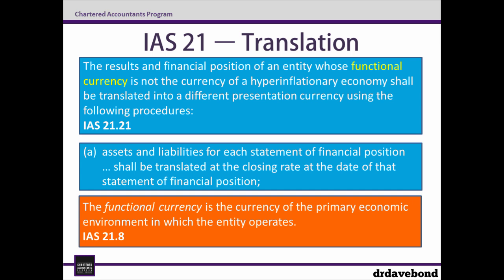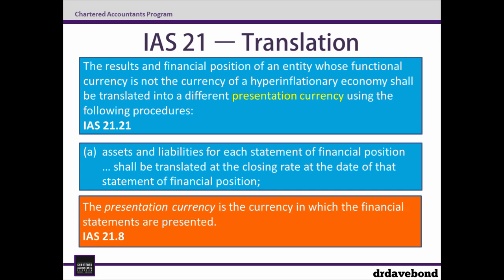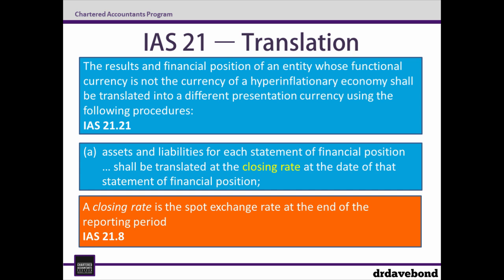The functional currency of Dinkum is the Aussie, but it's not always straightforward to determine this — however, we're not looking at how we deal with that here. The presentation currency is the currency, not unsurprisingly, in which the financial statements are presented; Union Jack uses the pound in this example. And finally, the closing rate is the spot exchange rate at the end of the reporting period. It makes sense to use the closing rate for assets and liabilities because the statement of financial position is a snapshot of the entity as at the end of the reporting period, so you might as well use the exchange rate on that particular date.